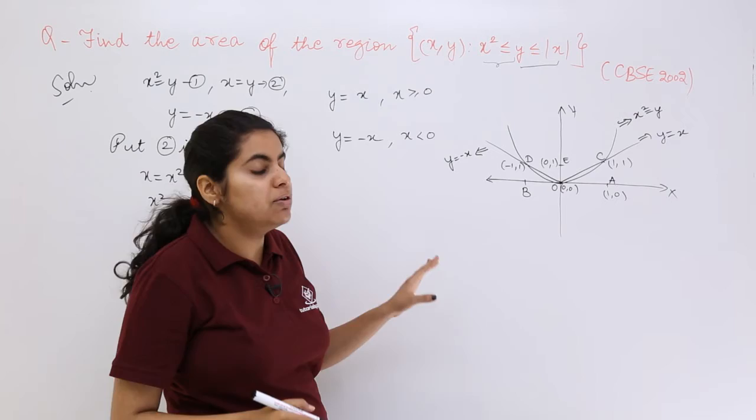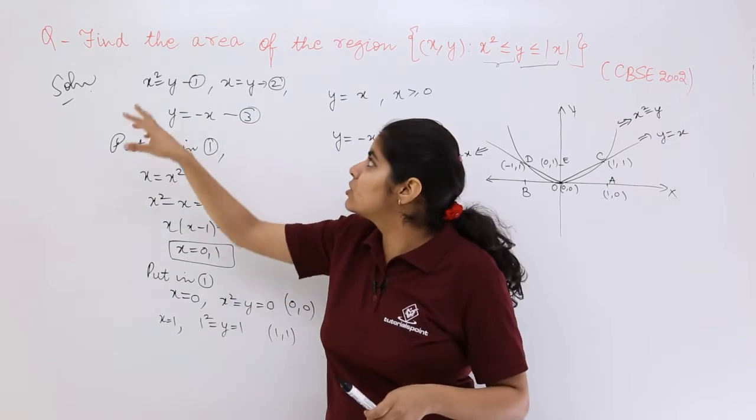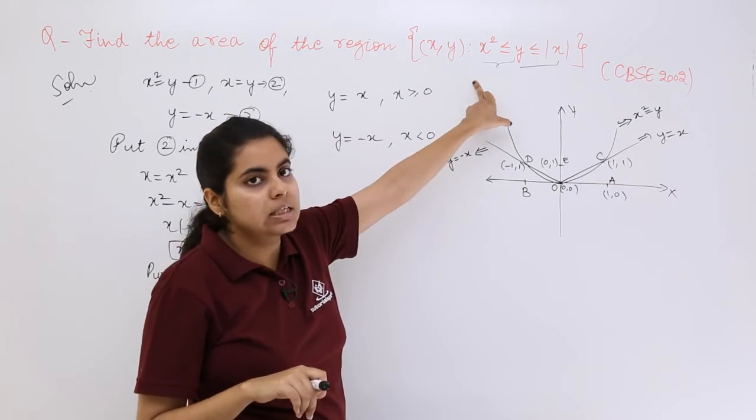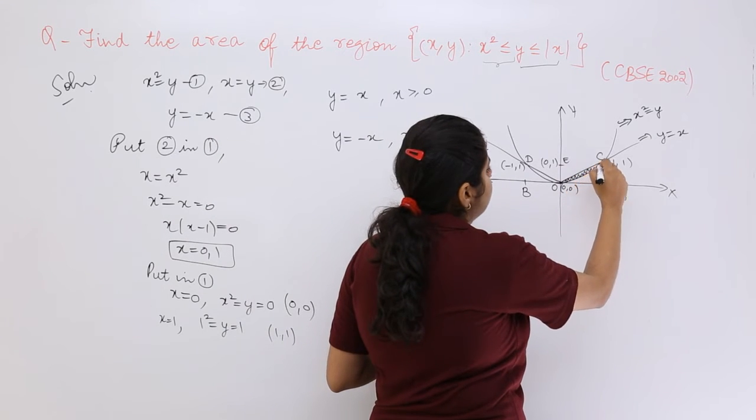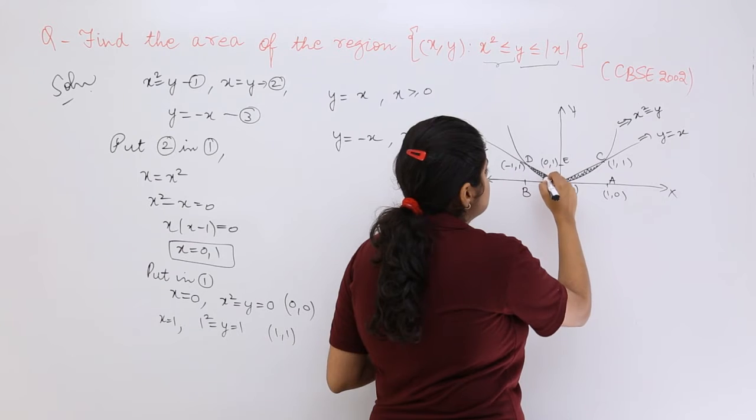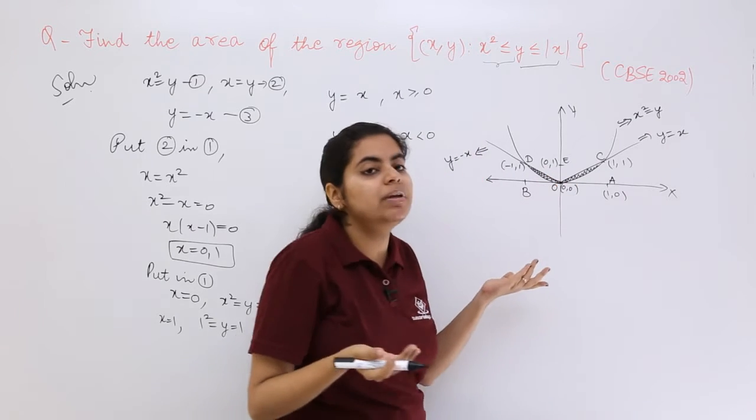Now as you can see what we are concerned is, let's read the question: find the area of the region. So that means you are about to find this shaded area as well as this shaded area. And that will complete your answer.